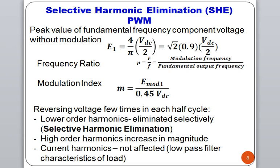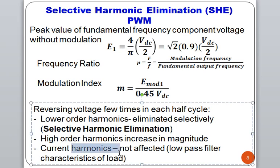Lower order harmonics can be eliminated selectively. But there is a disadvantage also: high order harmonics increase in magnitude. And the current harmonics are not affected — this is also an advantage.